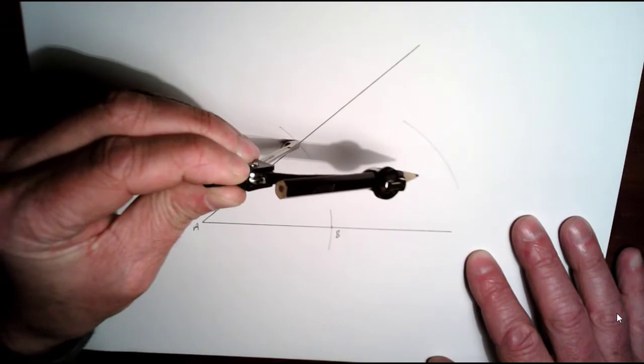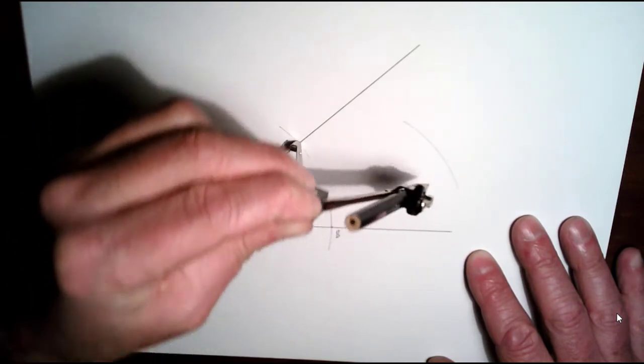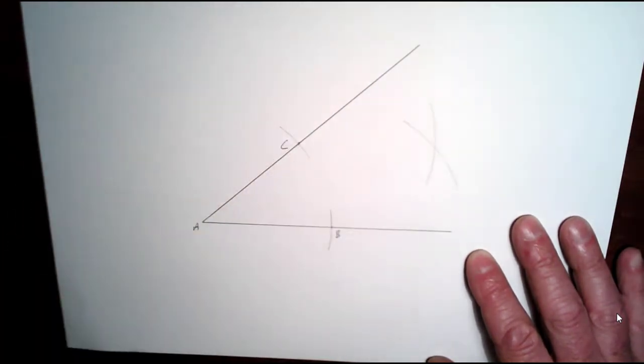Take your compass, put it at C, draw another arc up here. Make sure your two arcs intersect.